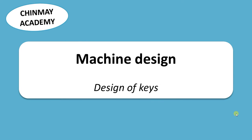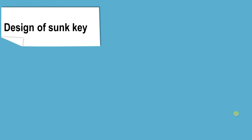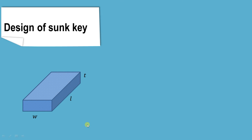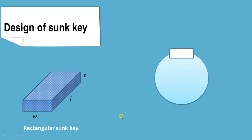In this video we will try to understand the design of keys, specifically the rectangular sunk key shown here. This is the width of the key, this is the length of the key, and this is the depth or thickness of the key. As we know, a key is used for temporary fastening of a shaft and a hollow hub or muff. Here we have shown the solid shaft and hollow hub, where the shaft has an external keyway and half of the keyway is made in the hollow part known as the hub or muff.